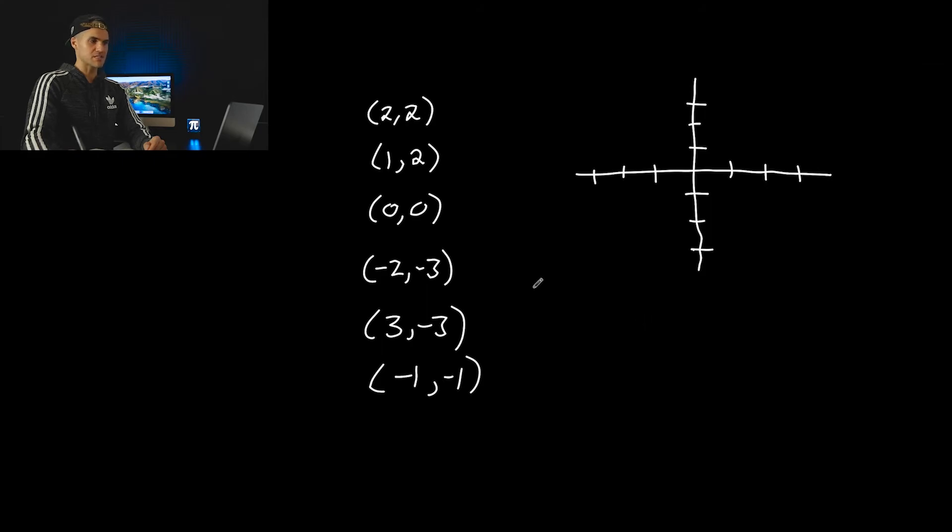And then finally part D, another set of coordinates. So let's get into graphing these. Again, both of our scales are going up by one here. So we got one and two, we got zero and zero at the origin. We got negative two and negative three. So that's going to be down here. We got three and negative three down here. And then we got a negative one, negative one. That's going to be right there.